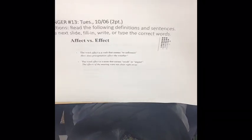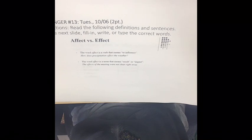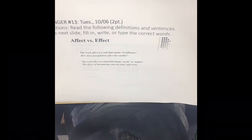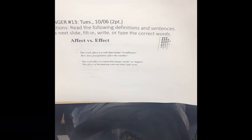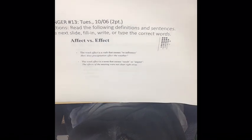All right, we are going over bell ringers for the week of October 6th. We're starting with Tuesday. We will no longer have a bell ringer on Monday, with the goal that we will meet in the classroom on Monday and we can go over them in class.